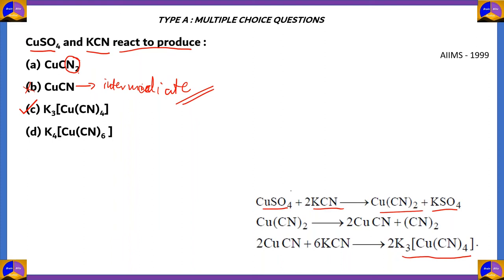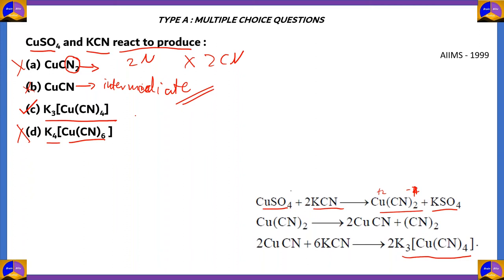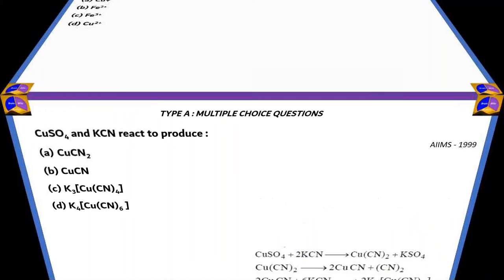Option A, Cu(CN)2, is written without brackets, so according to that formula there would be 2 nitrogen atoms and not 2 cyanide ions — option A is incorrect. Option D, K4[Cu(CN)6], does not form in these reactions, so option D is also incorrect. The right answer is option C, K3[Cu(CN)4].